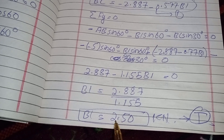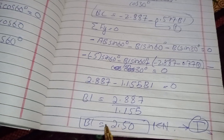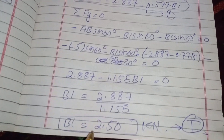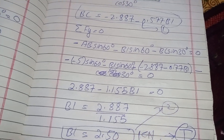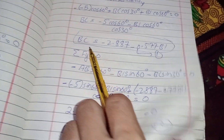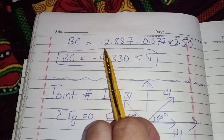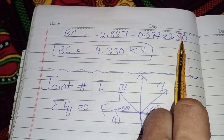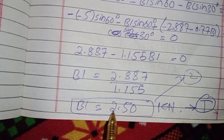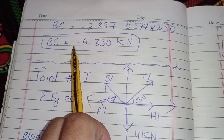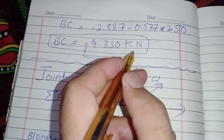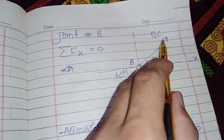BI = 2.50 kilonewtons in tension — the positive sign confirms my assumption was correct. Substituting BI = 2.50 into equation 1: BC = 2.887 − 0.577 × 2.50 = −4.330 kilonewtons. The negative sign means BC is in compression, not tension as assumed.